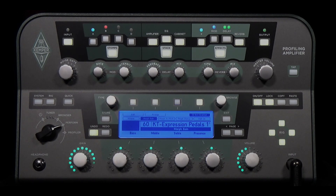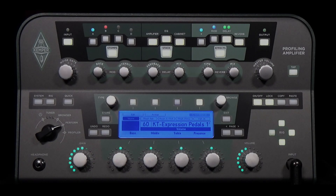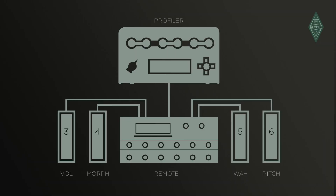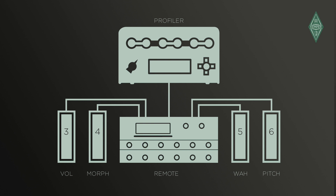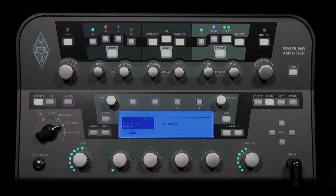Detailed tutorials on morphing are available in another tutorial video. For total control, you should use four pedals so that any available function is controlled by a dedicated pedal. I connected the pedals directly to the remote and used the factory assignments: pedal 3 for volume, 4 for morph, 5 for wah, and pedal 6 for pitch. The assignments are done in the system menu — press the system button and navigate to the pedal 3 page. Mode is set to pedal type 1 and function is set to volume. Everything is already prepared; you can change the settings with the two soft knobs.